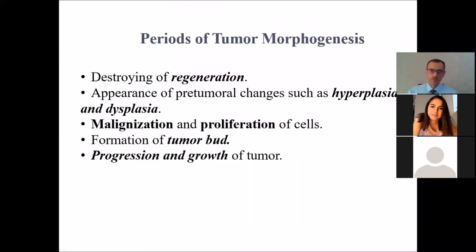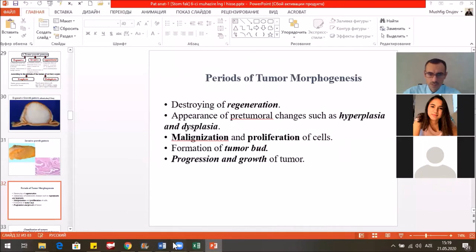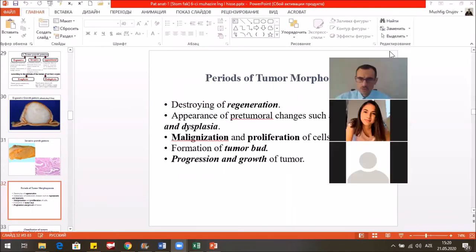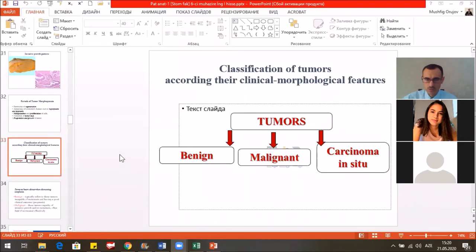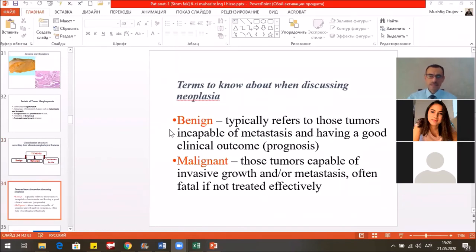The appearance of tumor morphogenesis involves the destroying of regeneration, appearance of hyperplasia, dysplasia, malignization, proliferation, formation of the tumor bud, and progression. Benign tumors are typically those incapable of metastasis and having a good clinical prognosis. Malignant tumors have the ability for invasive growth and metastasis, and are often fatal if not treated effectively.